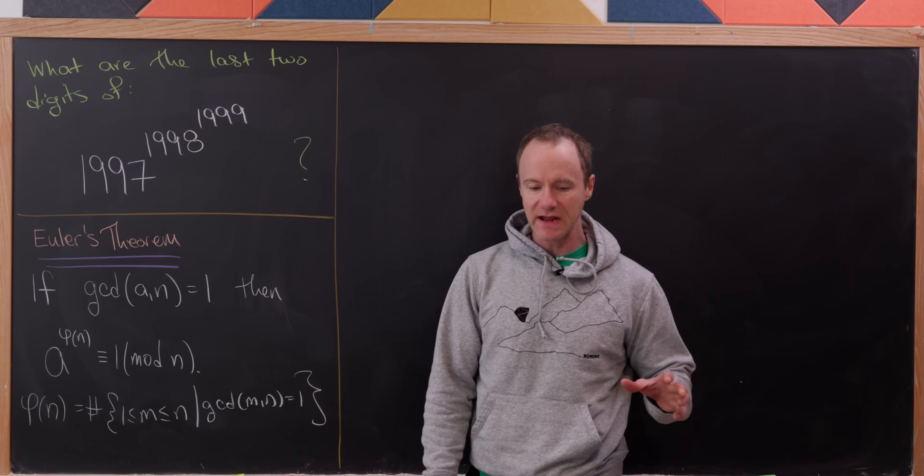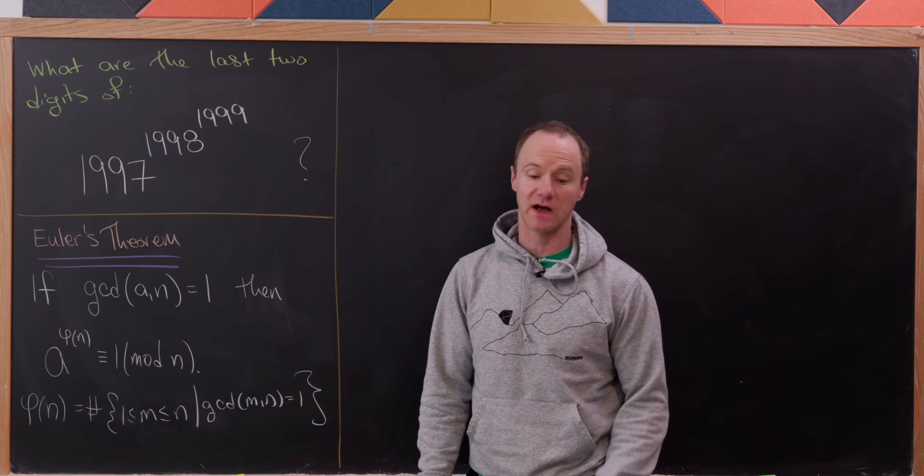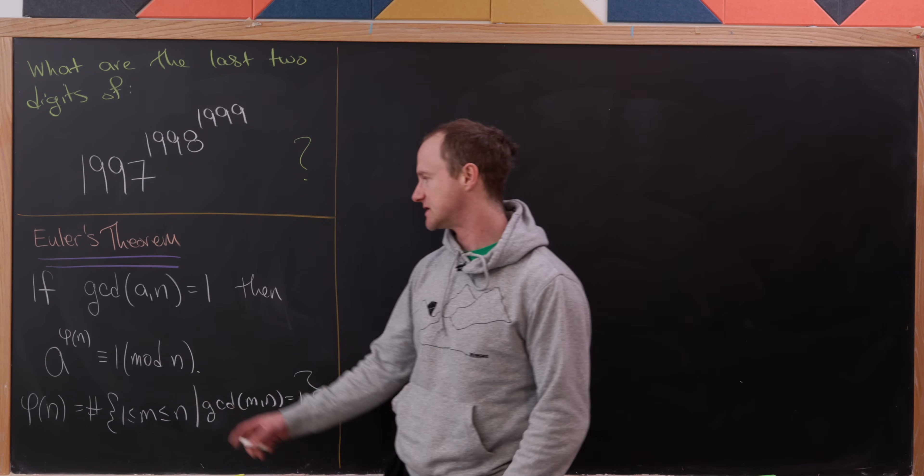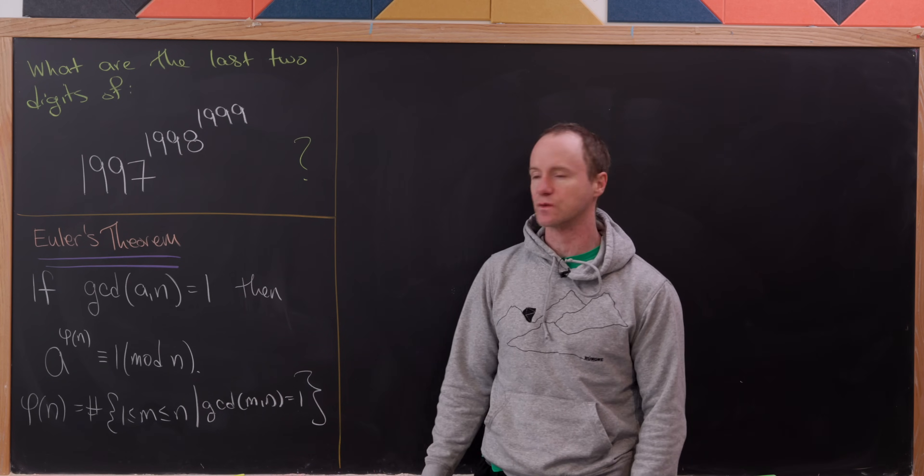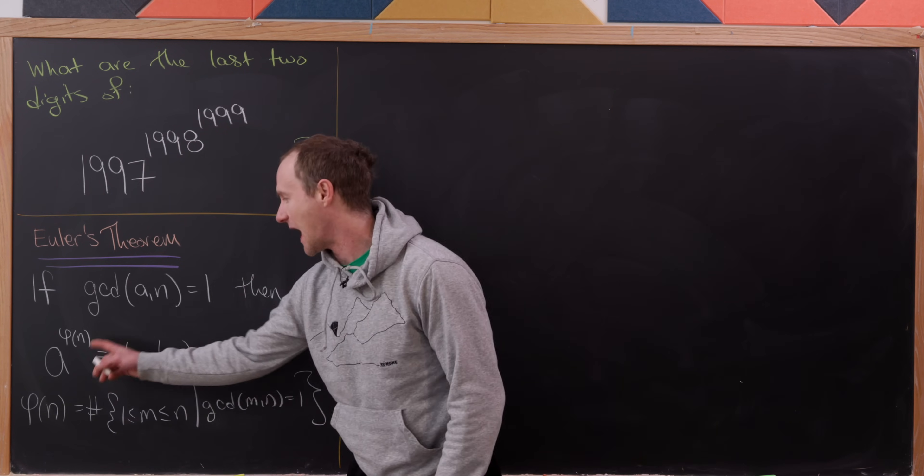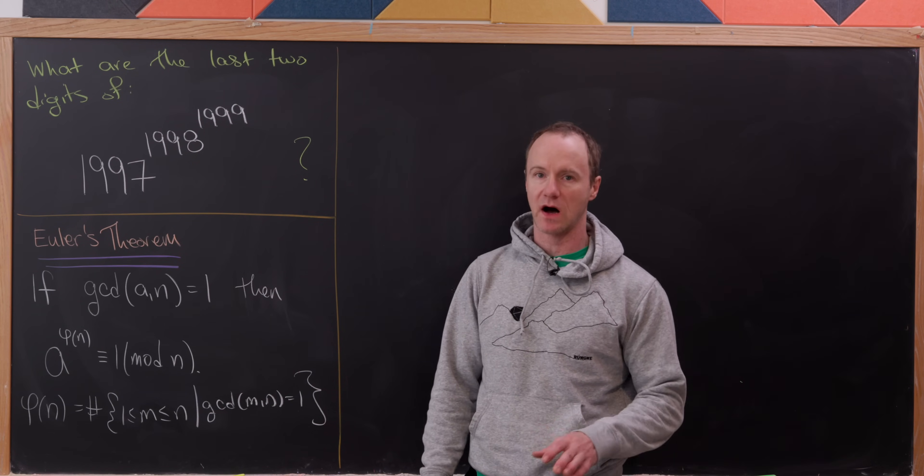Our main tool here will be Euler's theorem, sometimes called Euler's generalization of Fermat's theorem. It says that if a and n are coprime, in other words their GCD is 1, then a to the power φ(n) is congruent to 1 mod n.